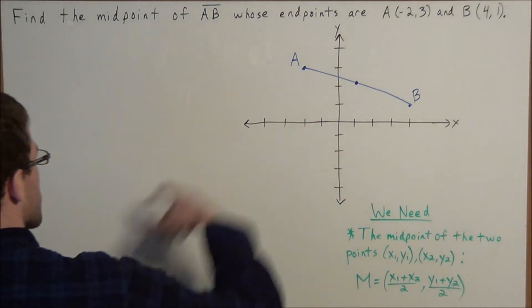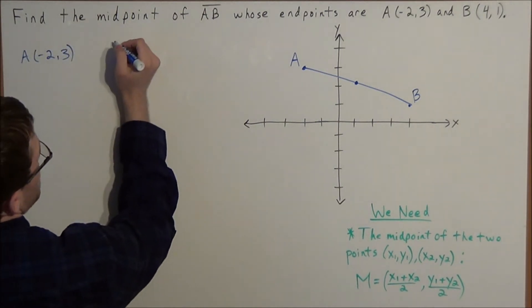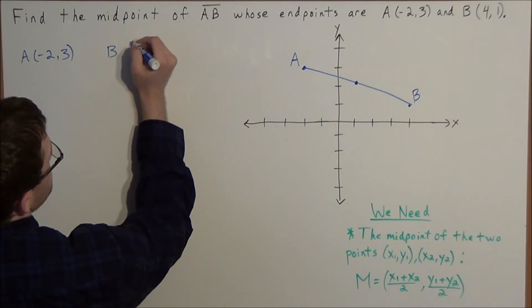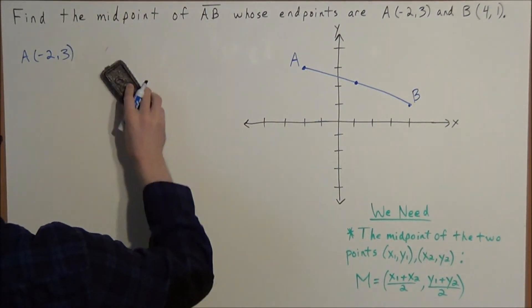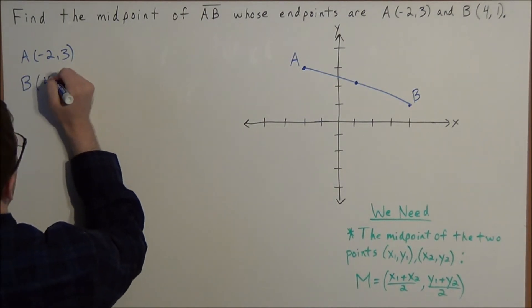So if we look at this example, we have A is the point (-2, 3) and B is the point (4, 1).